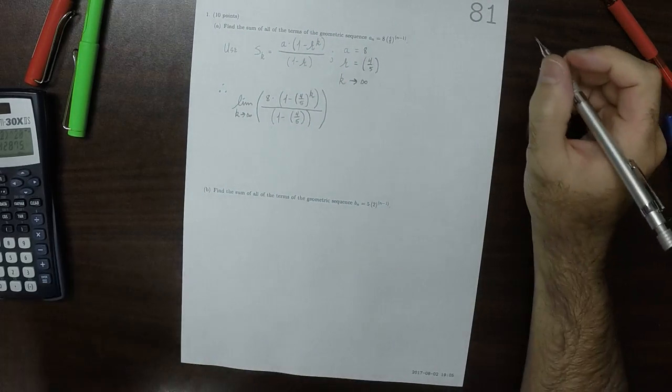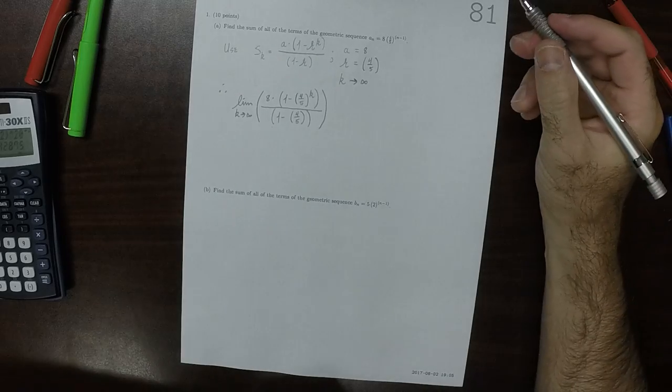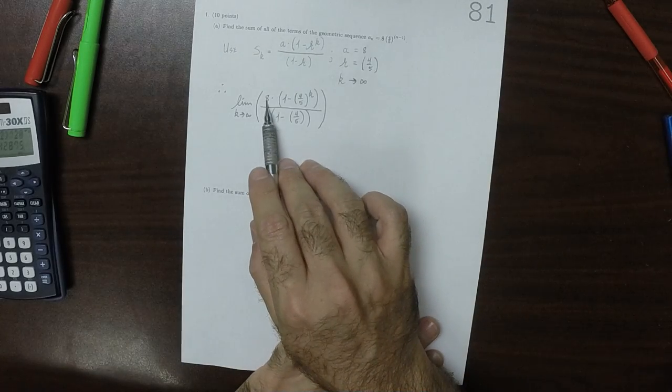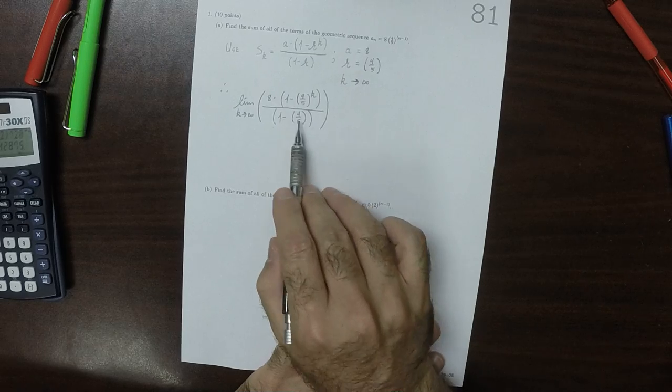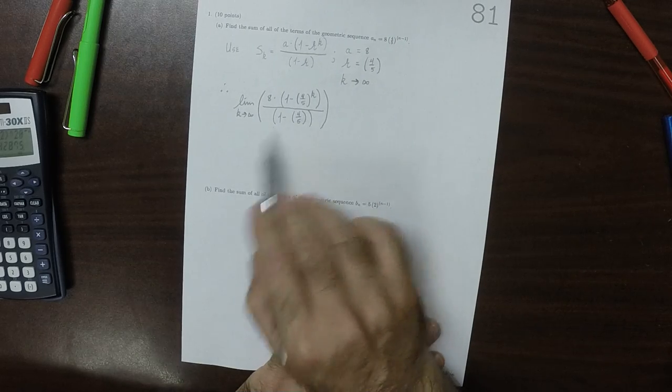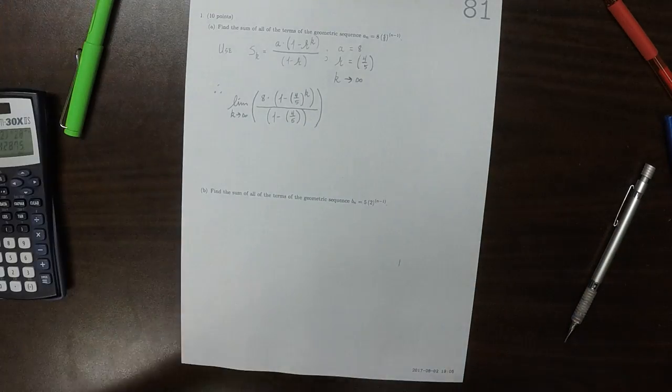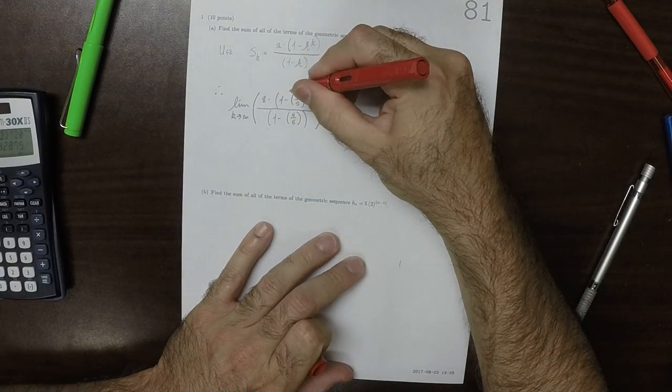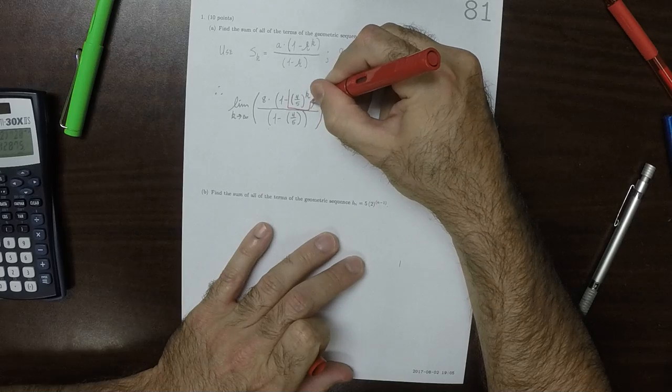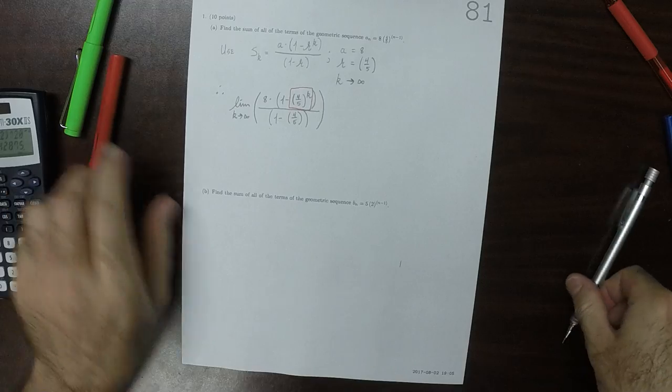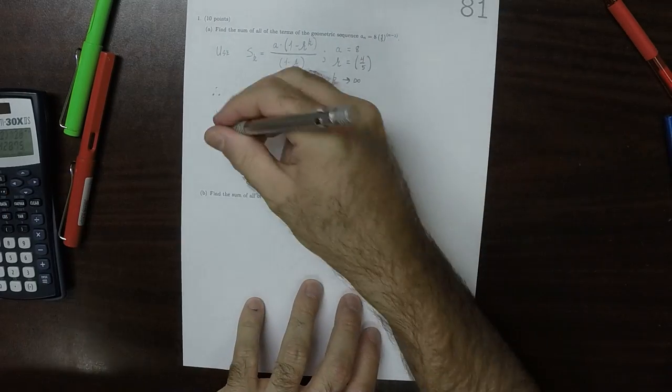Let's simplify this just a little bit. Or even, we don't have to simplify it. Because let's look: 8 is a constant, 1 is a constant, the entire denominator is a constant. The only thing that changes, the only thing that occurs, is that this term right here, that term is going to go to 0 as K goes to infinity.